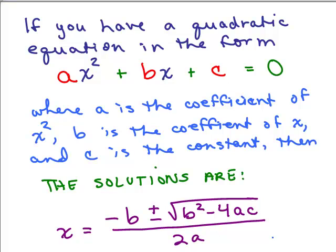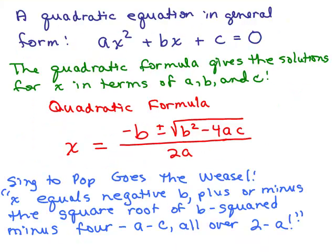There's a song to help you learn this formula, set to the tune of Pop Goes the Weasel: x equals negative b plus or minus the square root of b squared minus 4ac all over 2a. Sing it about 10 times for 5 days in a row and you'll never forget it.